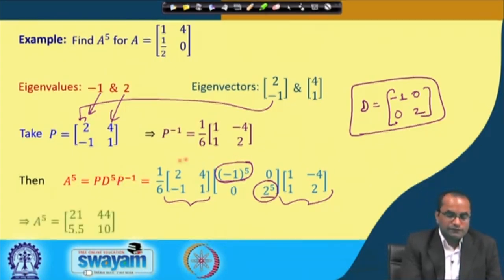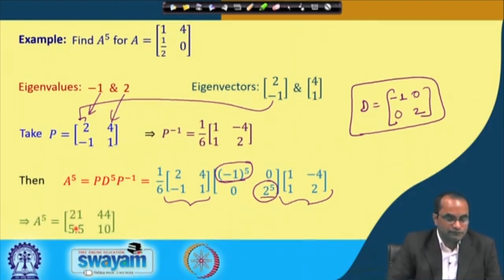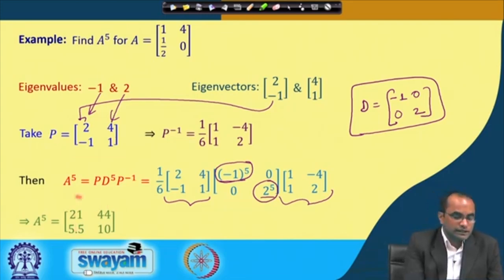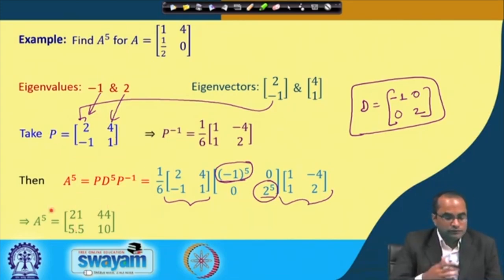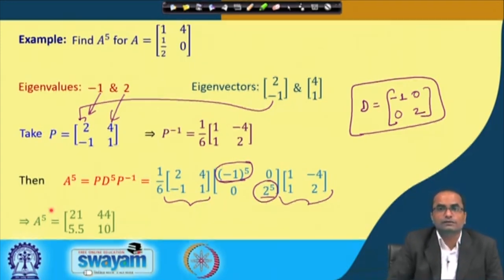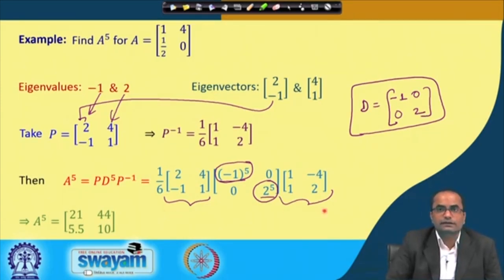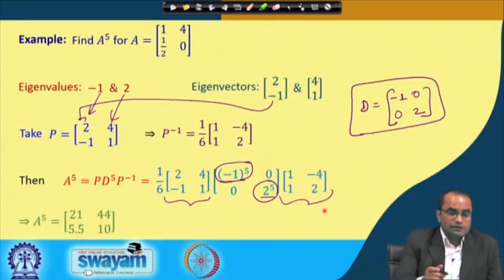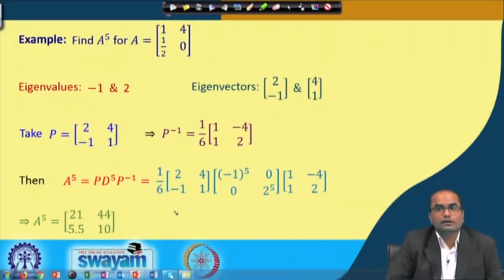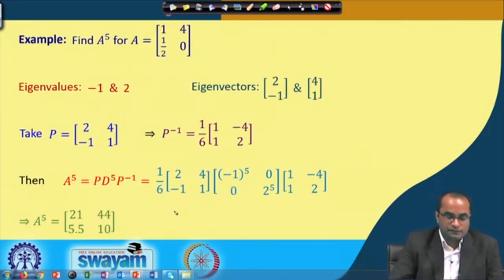Carrying out the matrix multiplication A⁵ = PD⁵P⁻¹ yields the result. This approach is computationally very efficient when computing a high power of matrix A, compared to repeated matrix multiplication directly.